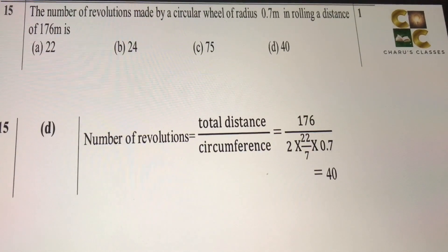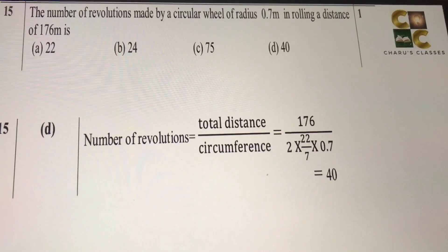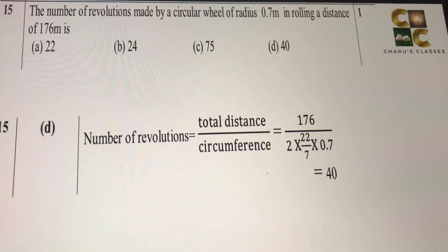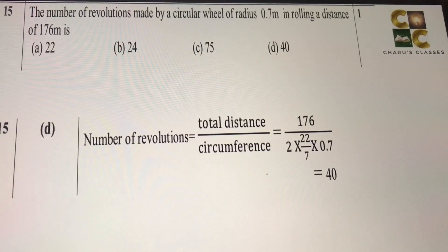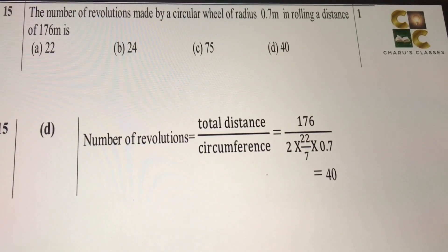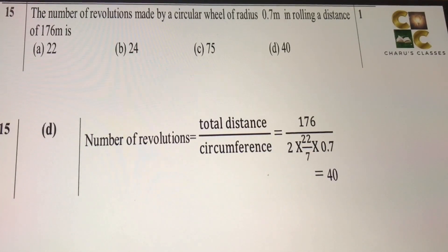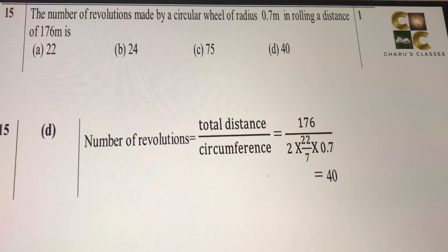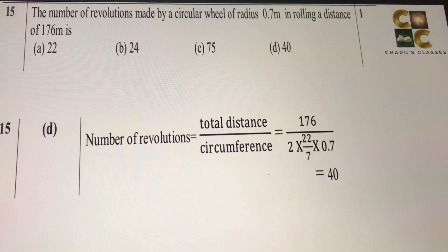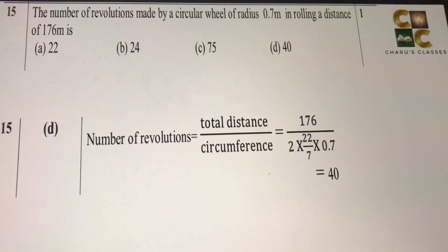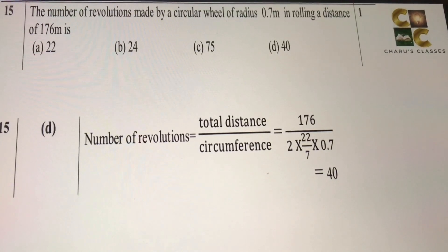15th: the number of revolutions made by a circular wheel of radius 0.7 meter in rolling a distance of 176 meters is. So there is a circular wheel, radius is given. And as it rolls, in one revolution, it moves basically one circumference of that circle. So 2πr is your circumference. If the total distance traveled is 176, then the number of revolutions are 176 by 2πr. We have to solve it, and it will give us the answer as 40 revolutions.